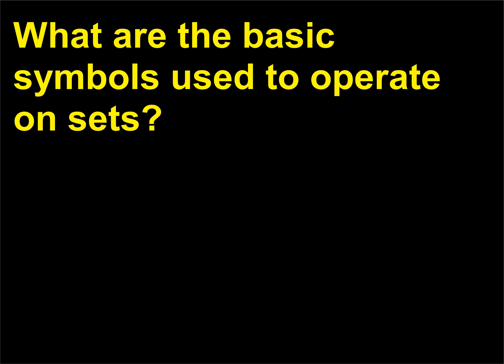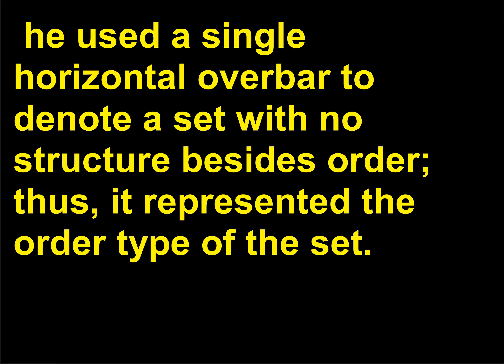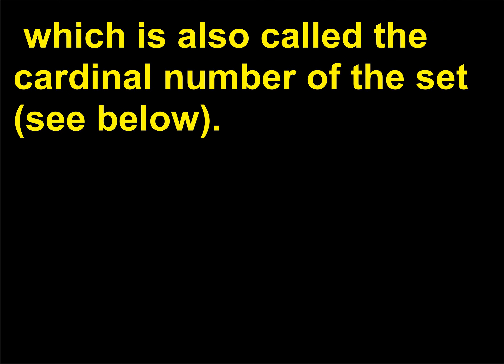What are the basic symbols used to operate on sets? When set theory founder George Cantor developed the symbols for sets, he used a single horizontal overbar to denote a set with no structure besides order — representing the order type of the set. A double bar meant that there was no order from the set, which is also called the cardinal number of the set.